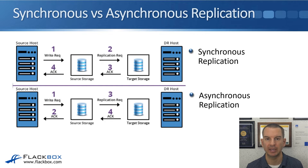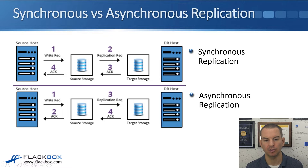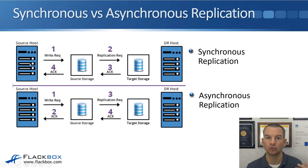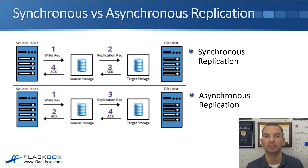With synchronous replication, the data is written to both the source and the target storage before an acknowledgement is sent back to the client. Because of this, you can't have too much delay. If it takes too long to write data from source to target and for the acknowledgement to come back to the client, it's going to time out the application on the source host. With synchronous replication, you always have two copies of the most current data in both locations, but there is a time and distance limitation.